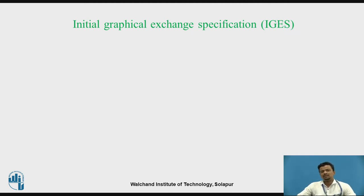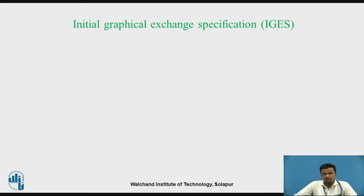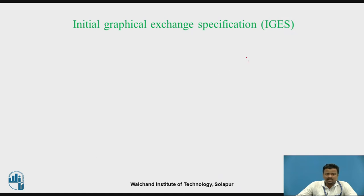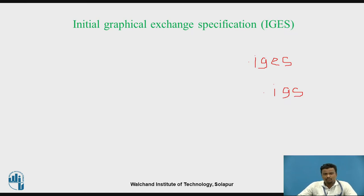The .IGS file is a very important Data Exchange Format file. Whenever we want to transfer the entire product from one model to another, from one software to another software, we use this format. For example, suppose I want to save a file — I can save it with the help of .IGS. These are the Data Exchange Format files with which you can save and import files from one software to another.